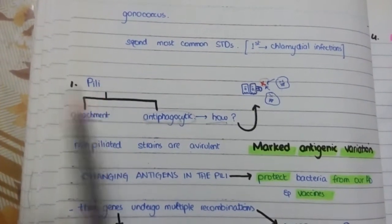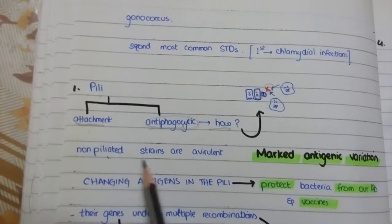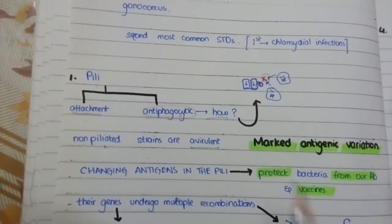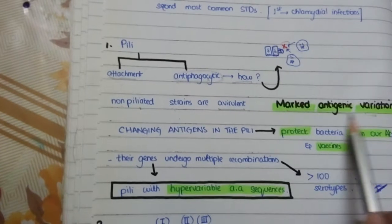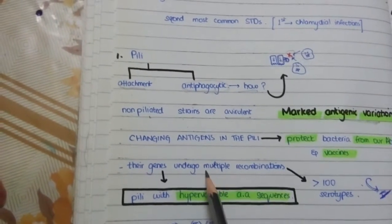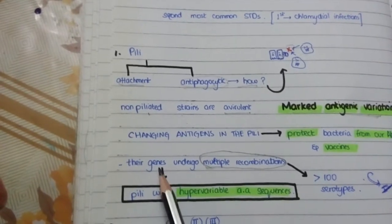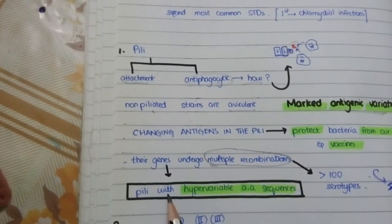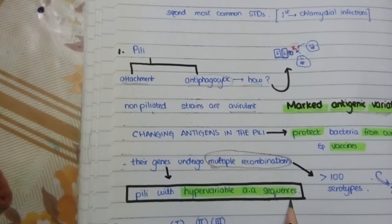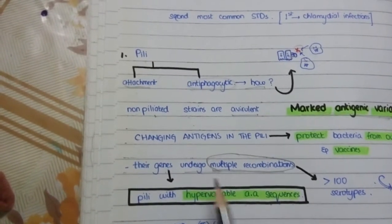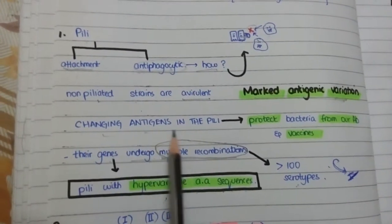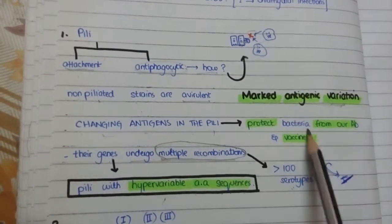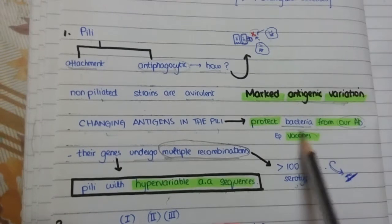The pili are so significant that non-piliated strains are avirulent. One important property is marked antigenic variation — a phenomenon in which there are multiple recombinations in the genes encoding the pili, leading to pili with hypervariable amino acid sequences. Because of this variation, there are more than 100 serotypes of Neisseria gonorrhoeae, and these changing antigens protect the bacteria from our own antibodies and from vaccines.